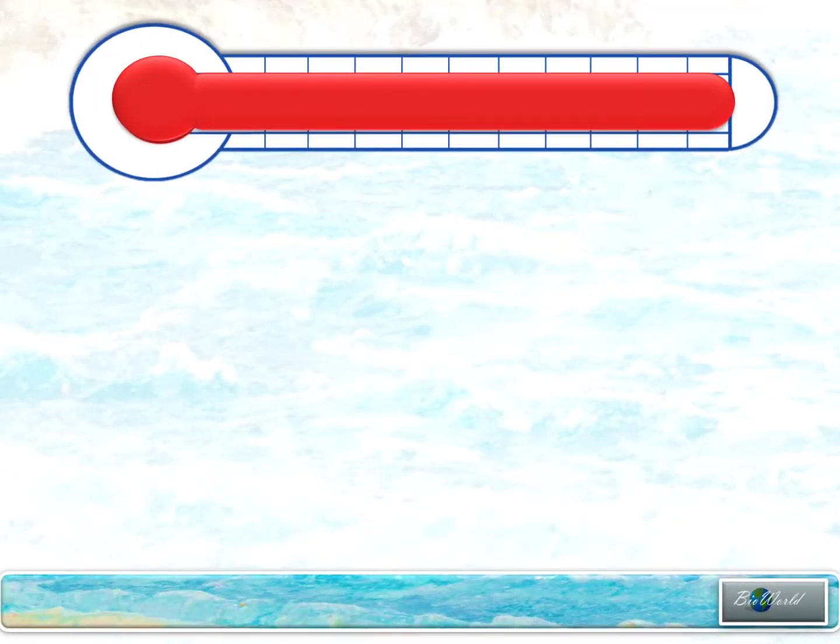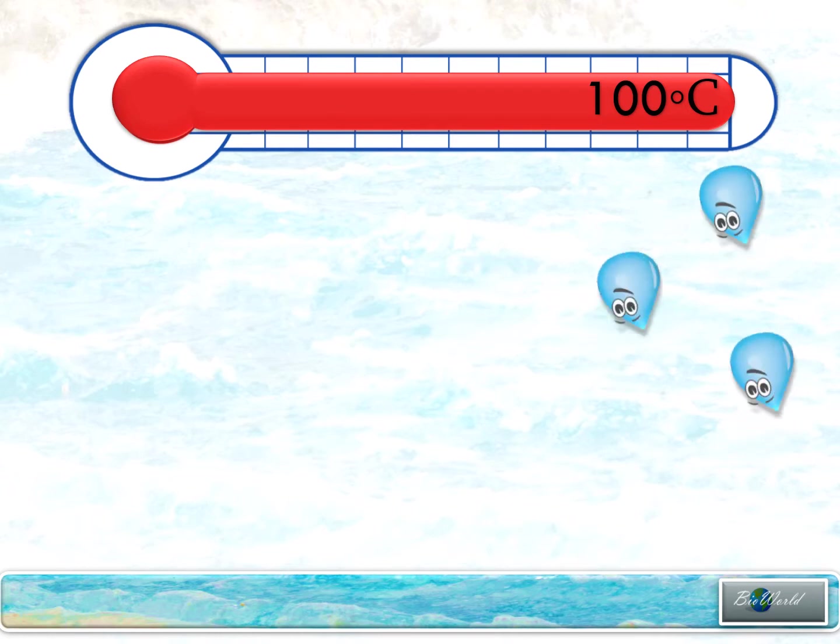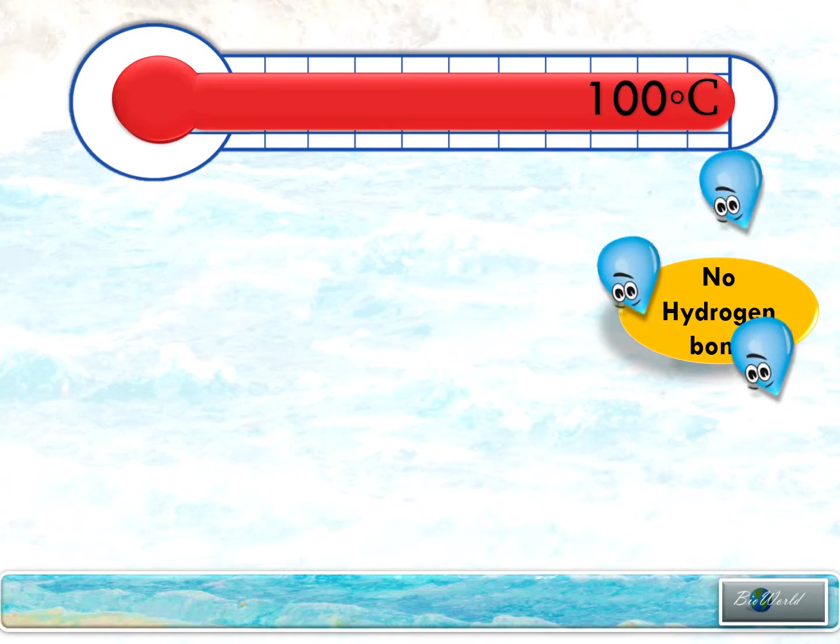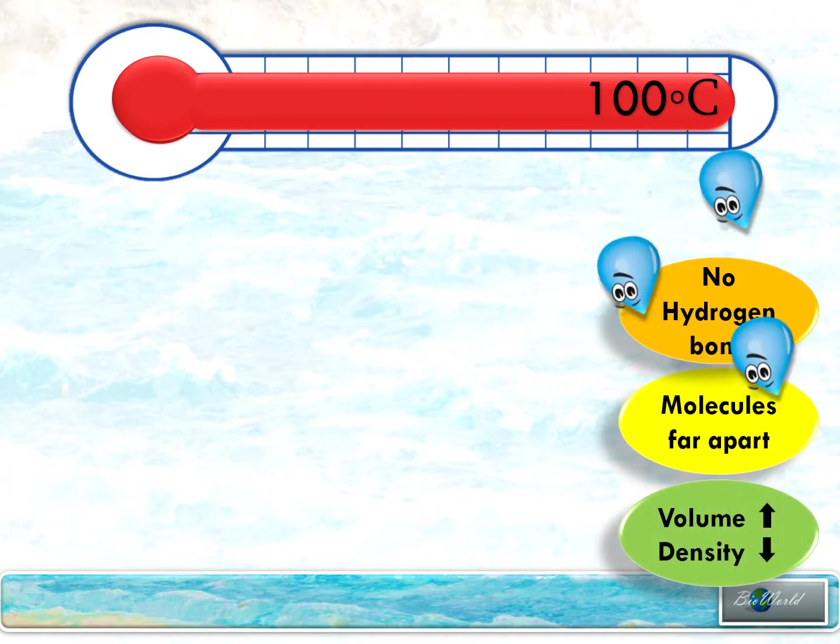The thermometer here is showing us a temperature of 100 degrees. Now water molecules at this temperature will have high kinetic energy. This will prevent them from forming any hydrogen bond. Without hydrogen bonds holding water molecules together, the water molecules will move far apart, making their volume bigger.